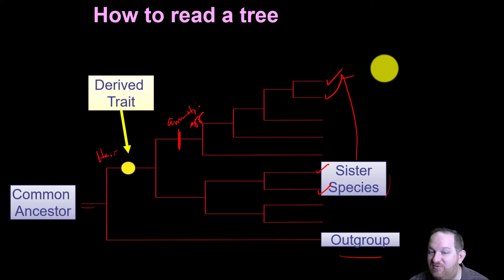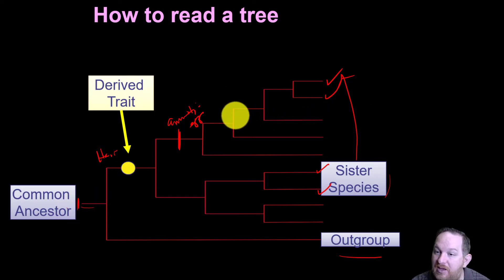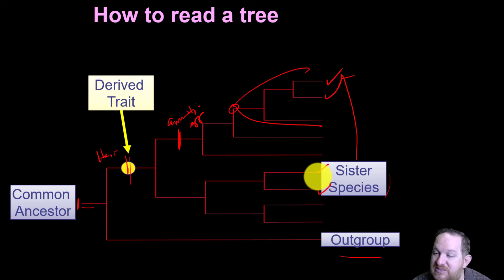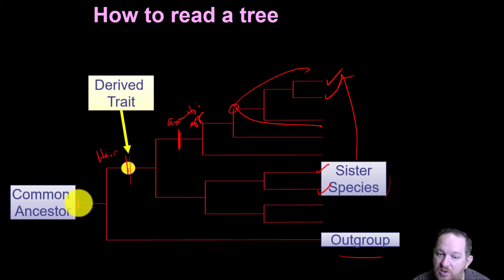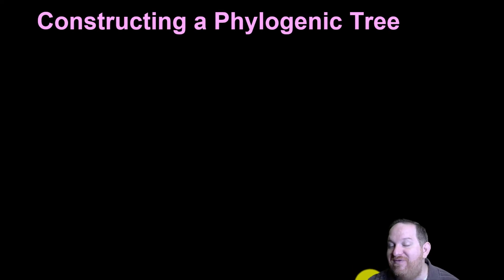So just to review: we've got our common ancestor at the base — this is the common ancestor for all. This would be the common ancestor for a subset. A derived trait is marked and labeled on the line. Two very similar species are the sister species, and the one that branches out first from the original ancestor is the out-group. So let's look at a tree and try to determine what the out-group is, what the sister species are, and where the common ancestor is. We first have to construct that tree.